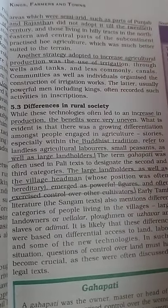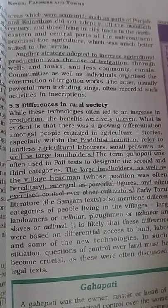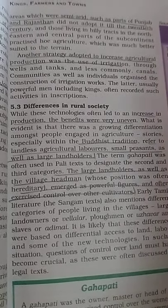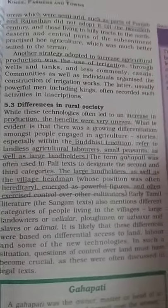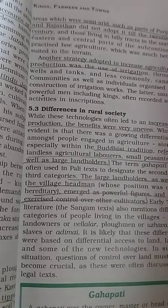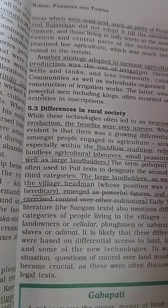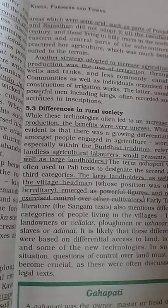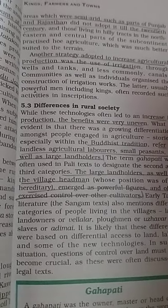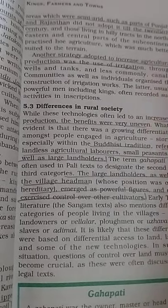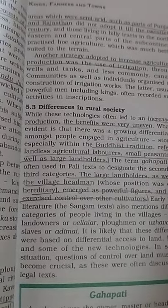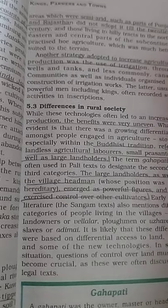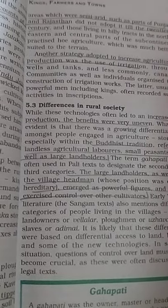While technology opened up agricultural production, the benefits were very uneven. There is evidence of growing differentiation among people engaged in agriculture. Stories, especially within the Buddhist tradition, refer to landless agricultural labourers and small peasants as well as large landholders. The large landholders and village headmen emerged as powerful figures and often exercised control over other cultivators.